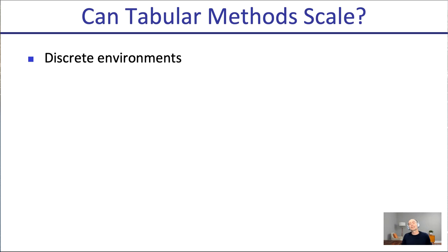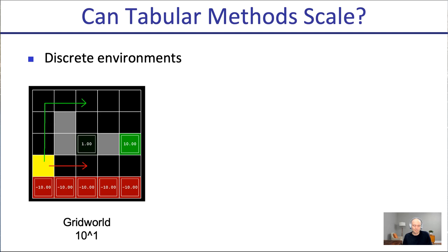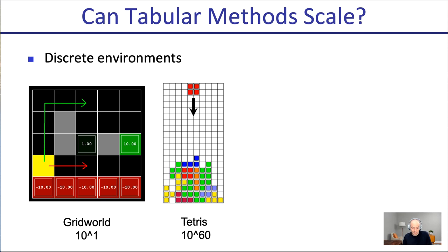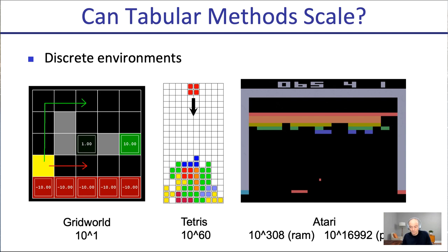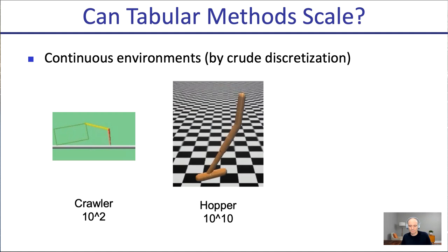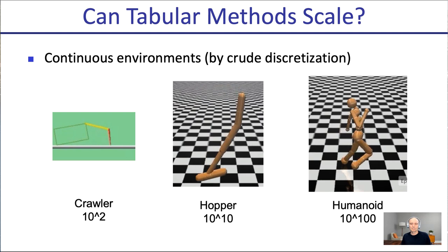So can tabular methods scale? For a 10-state grid world, a table is easy. But Tetris has 10^60 states — we cannot store or work with tables of that size. Atari has 10^100 to 10^300 or more states when working from pixels. For continuous environments, even with crude discretization, a hopper would have 10^10 states and HumanoidWorld 10^100 — impractical to have one table entry per state. We need to do something else.